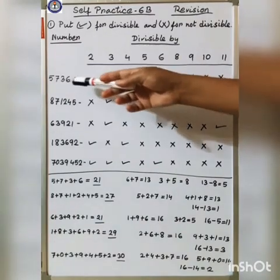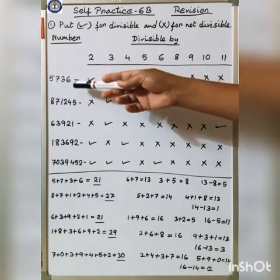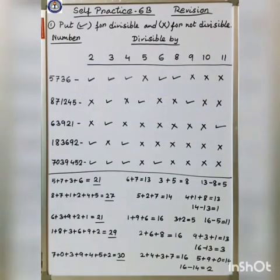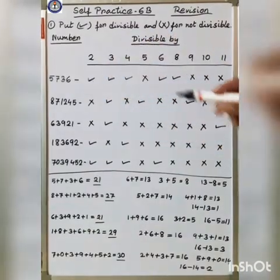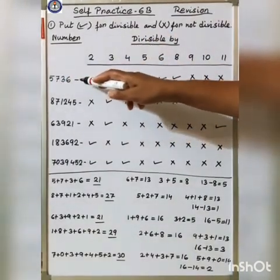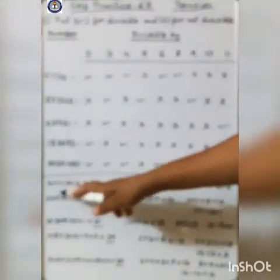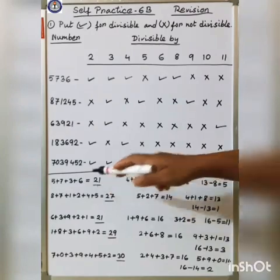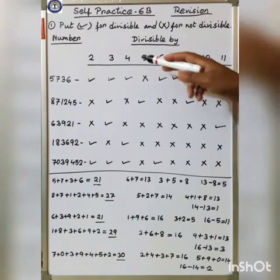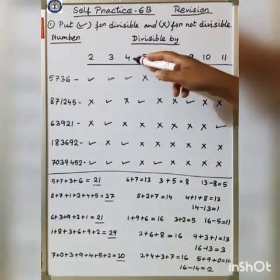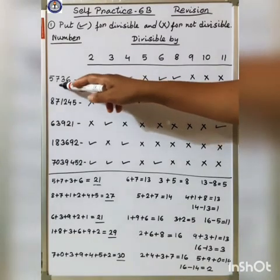Divisibility by 2: if the ones digit is divisible by 2, then the whole number is divisible by 2. Since 6 is divisible by 2, the whole number is divisible by 2. For 3: if the total of the digits is divisible by 3, then the whole number is divisible by 3. The total of the digits is 21, and 21 is divisible by 3, so the number is divisible by 3.